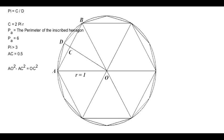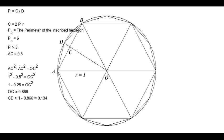AO is equal to 1 and AC is equal to 0.5. So our equation becomes 1 squared minus 0.5 squared equals OC squared, or 1 minus 0.25 equals OC squared. 1 minus 0.25 equals 0.75, so OC is approximately equal to 0.866. Line OD is another radius of the circle, therefore it's also equal to 1. Therefore, CD equals 1 minus 0.866, which is equal to 0.134.